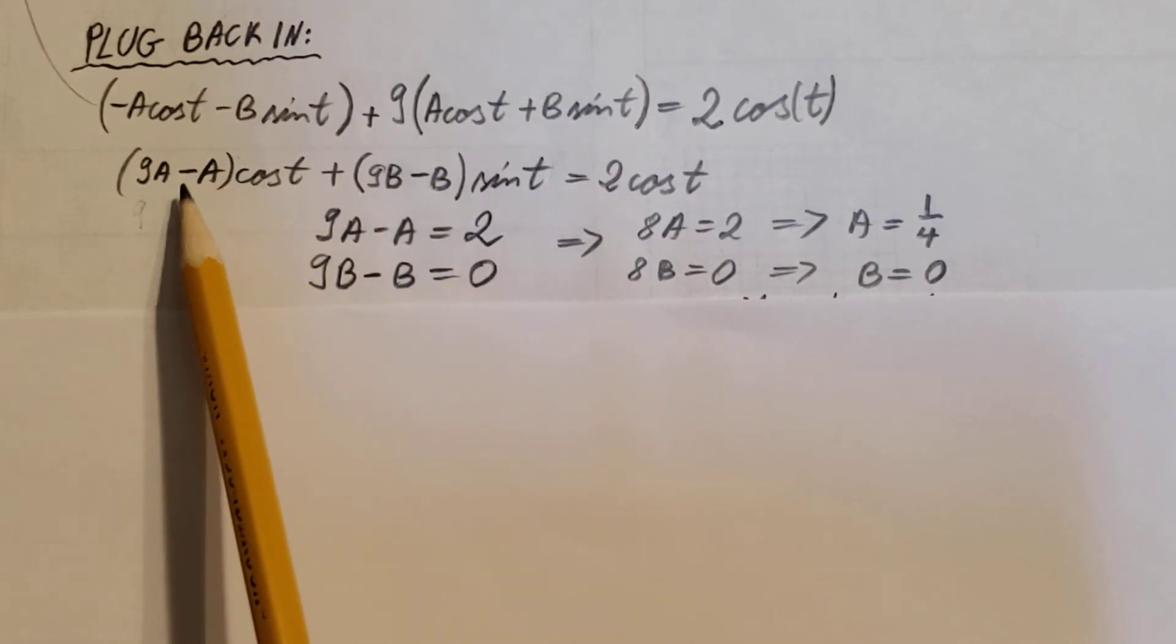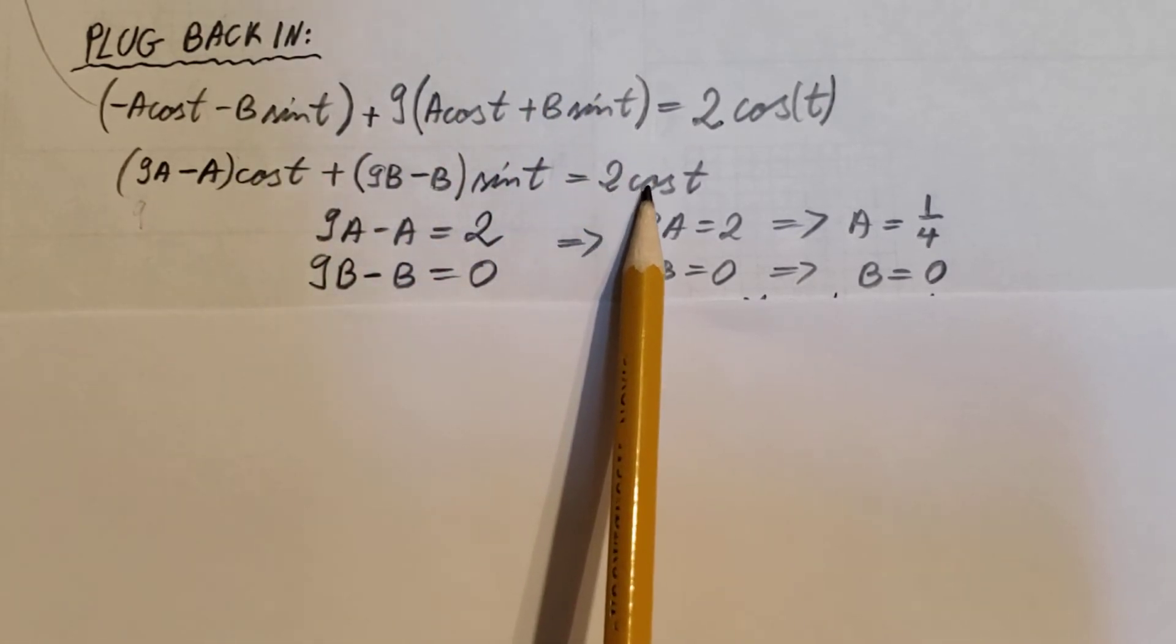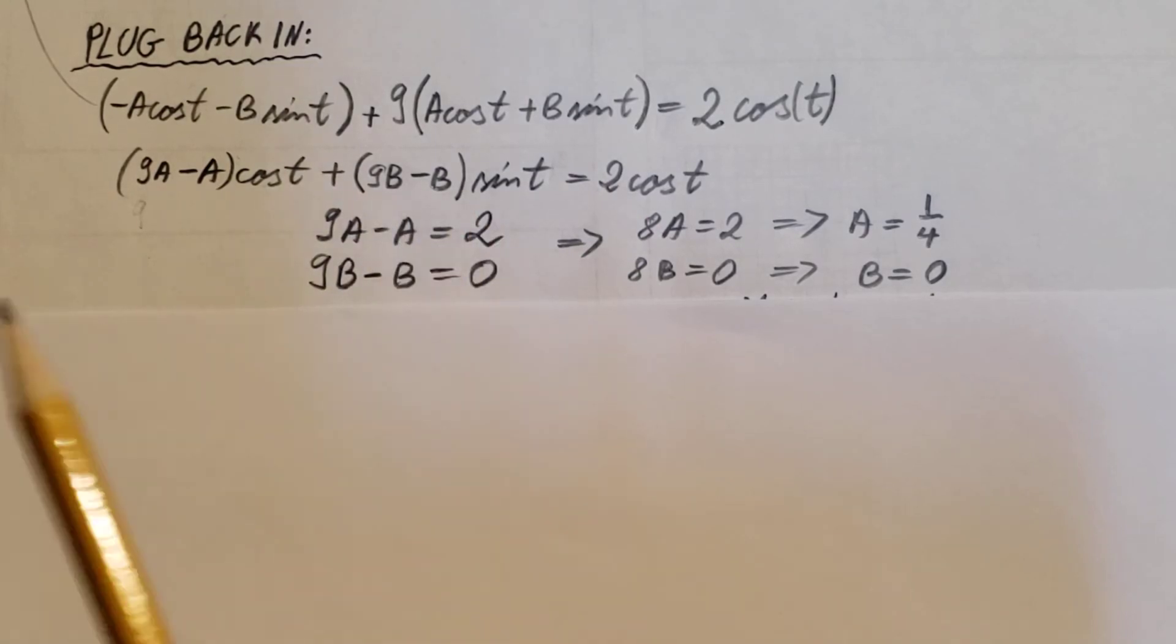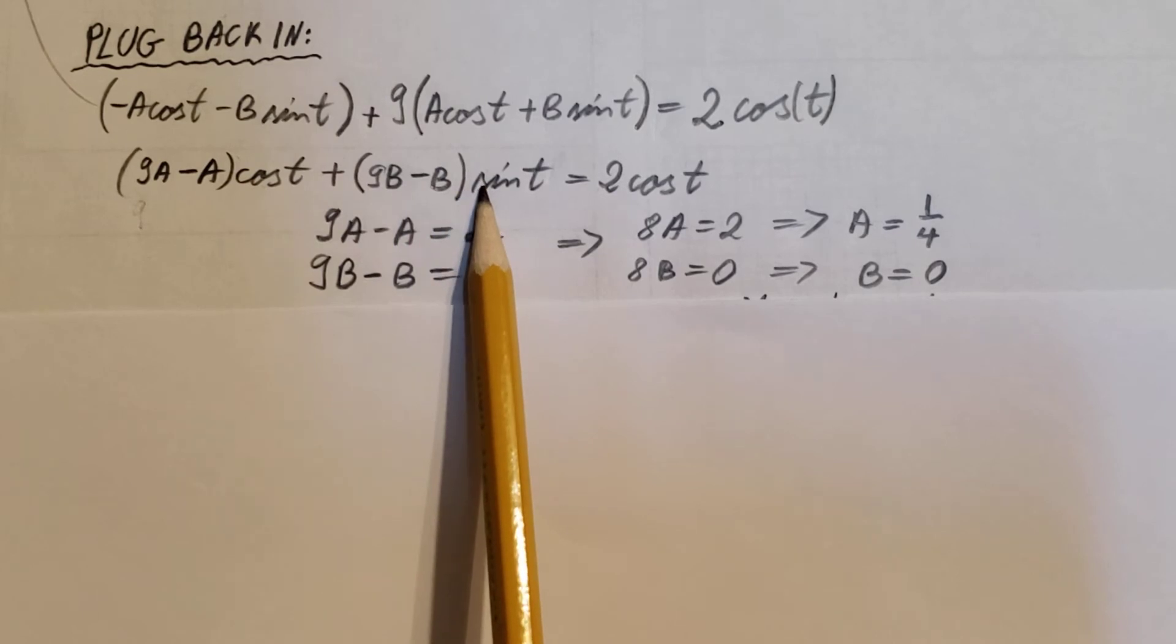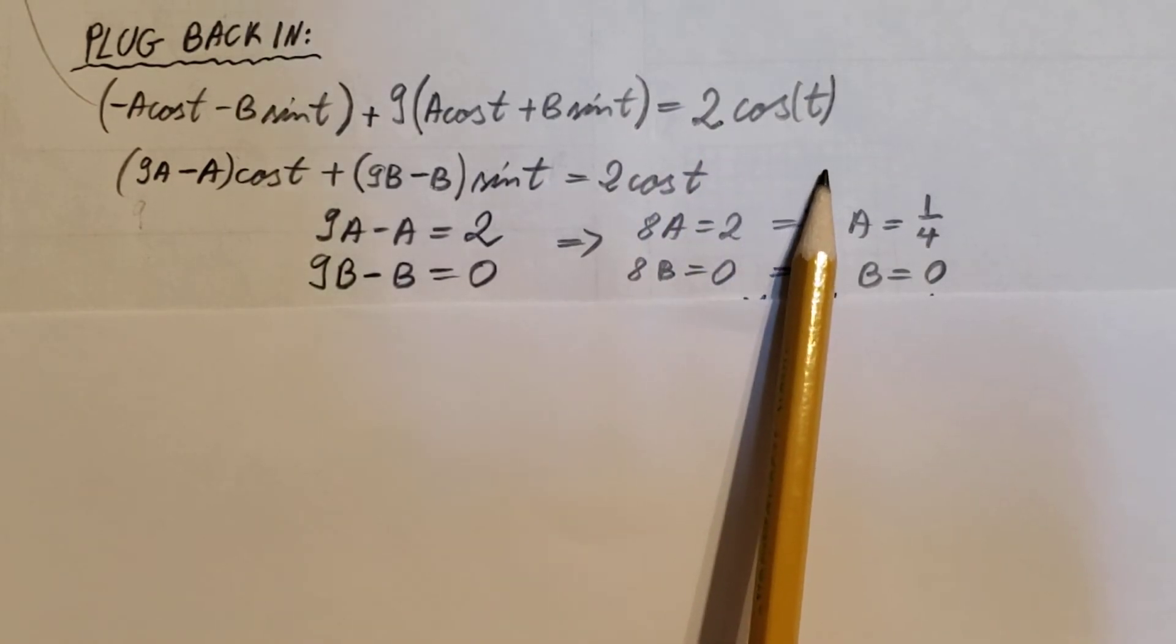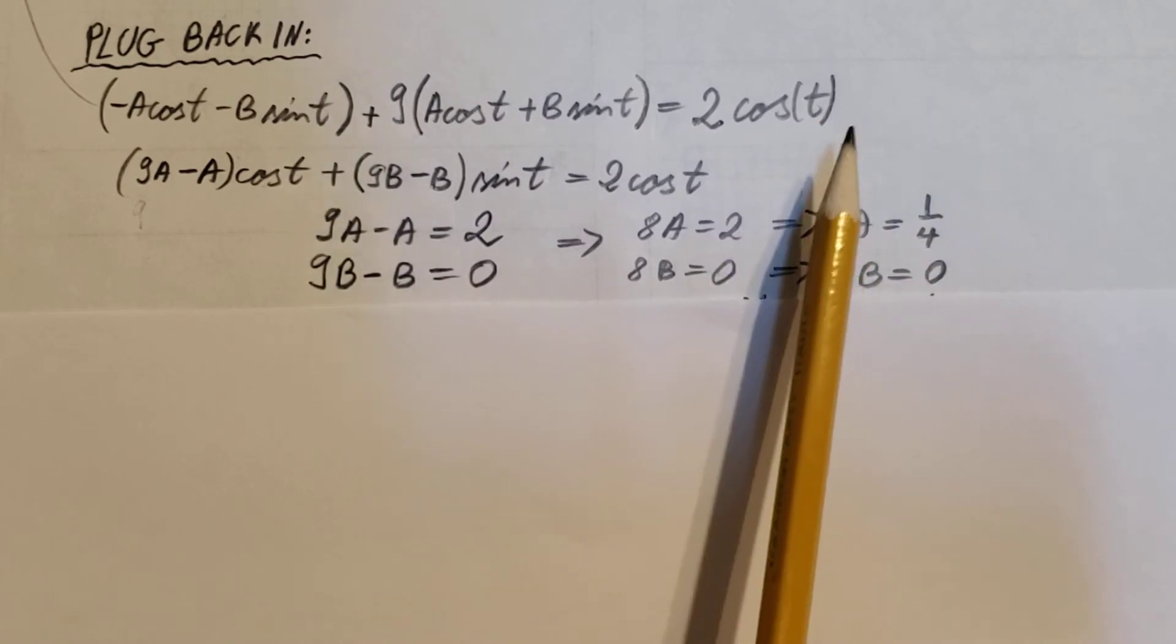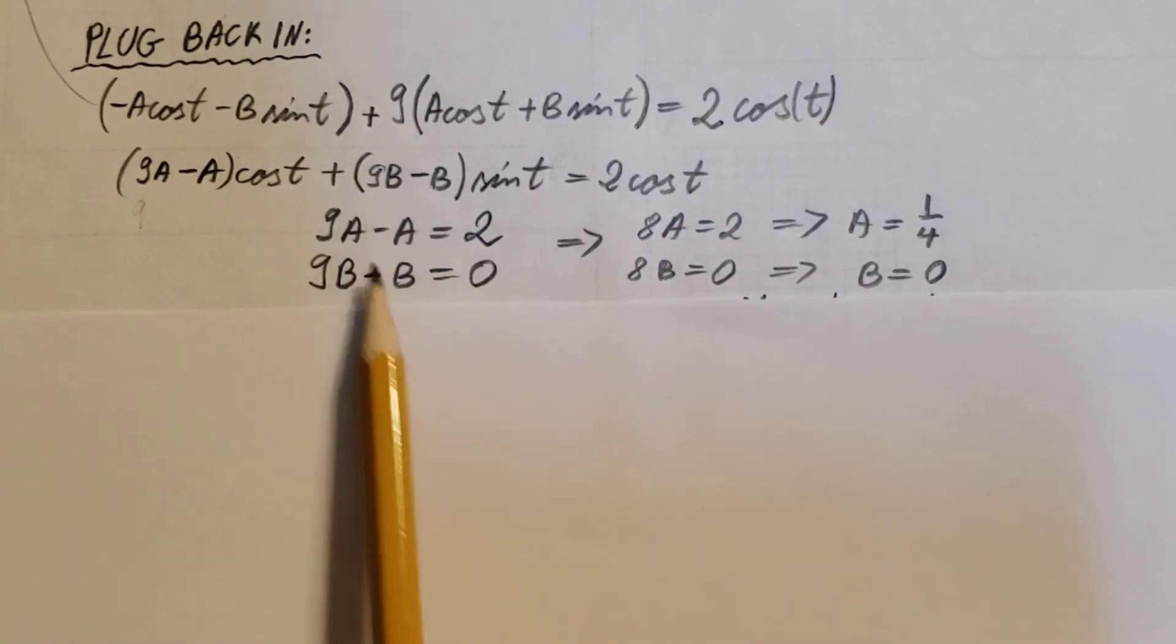Let's do the cosine first. We have cosine t here and cosine t here, so the coefficients we're gonna put equal to each other: 9a minus a equals 2. For sine on this side, the coefficient is 9b minus b, and on this side we have sine with coefficient 0, so equal to 0.